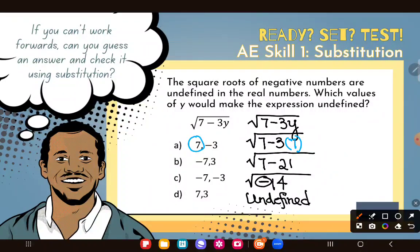When I plug in seven, this gives me an undefined expression. And once again, when I say it's an undefined expression, I'm saying it doesn't make sense in this number system. Square root of a negative doesn't make sense. And so what did I just learn? I learned that seven works, makes this sucker undefined.